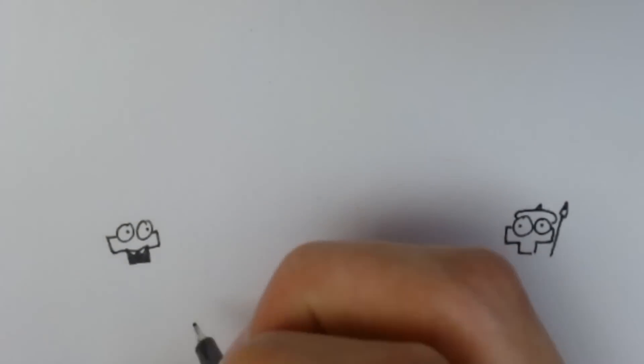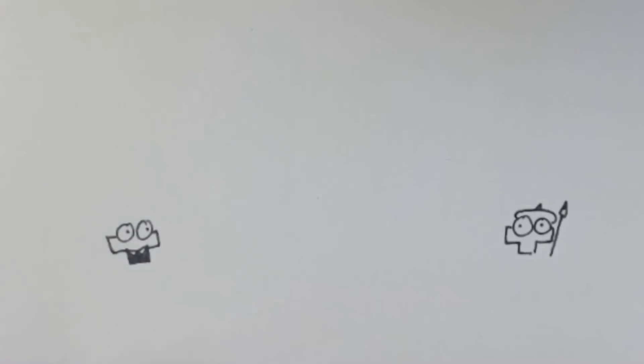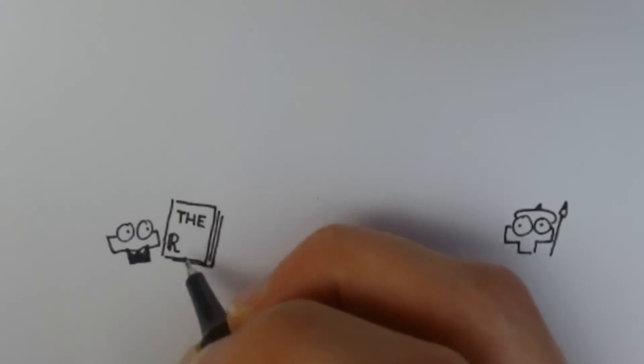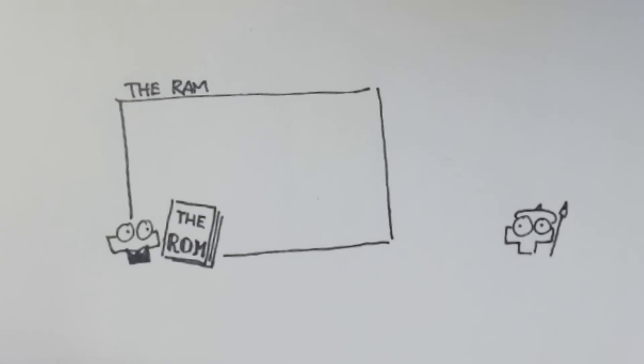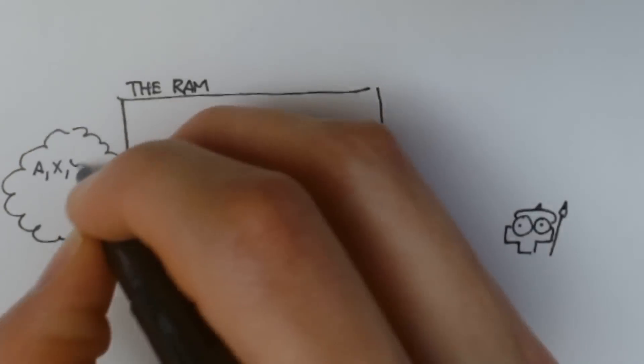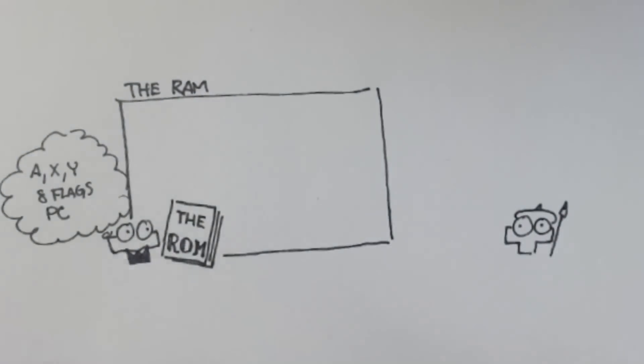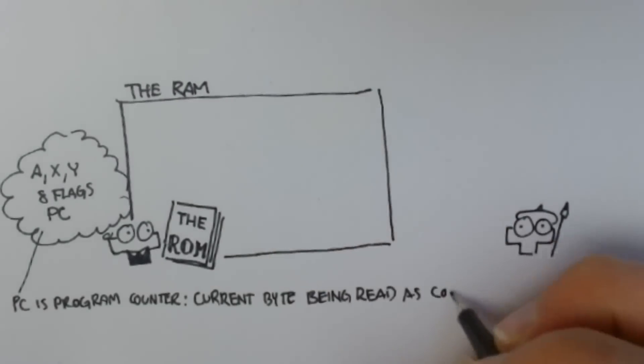The NES is like two people in a classroom. One's an artist, and the other is a mathematician. The mathematician has a textbook which contains all the code and data that they need to run the game, and a whiteboard to do any working out on. They're able to remember in their head three numbers, eight yes or no flags, and where in the book they are, but anything more than that has to be written down on the board.